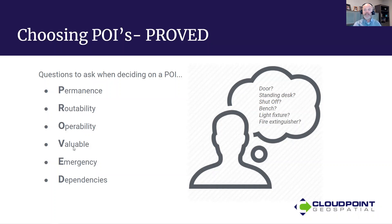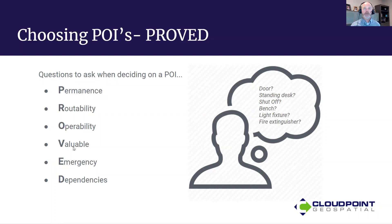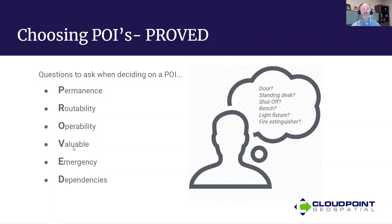E — Emergency. Is it utilized in emergency situations? A perfect example would be a shutoff. Let's say there's a gas shutoff and there's an emergency — a fire with the fire department responding and they need to know where the gas shutoff is. That definitely qualifies as a POI because it's required in emergencies.